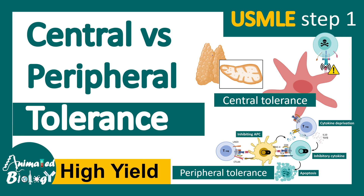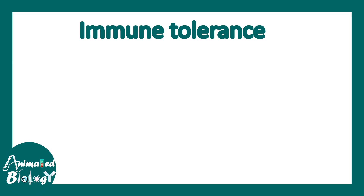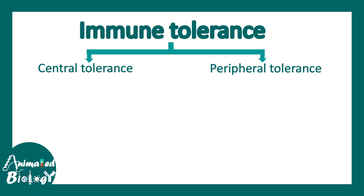In this video, we'll be talking about central versus peripheral tolerance in the context of the immune system. This is a high-yield topic for USMLE Step 1. Immune tolerance is a mechanism by which the immune system ensures that there are no autoreactive T-cells or B-cells that can harm the body.